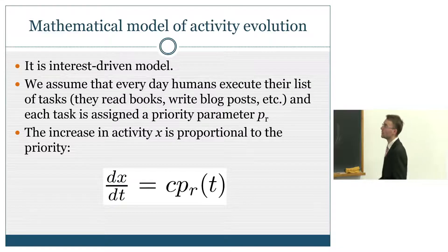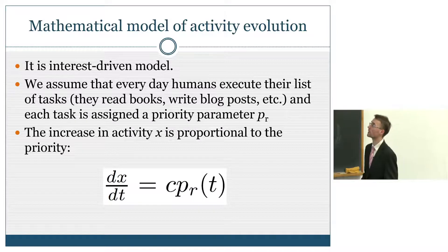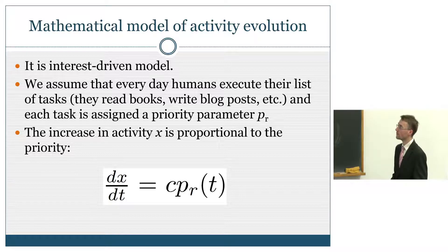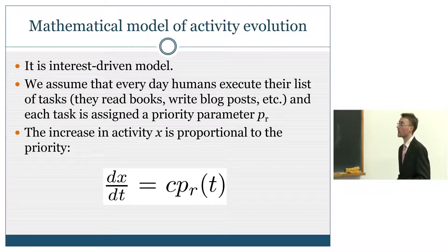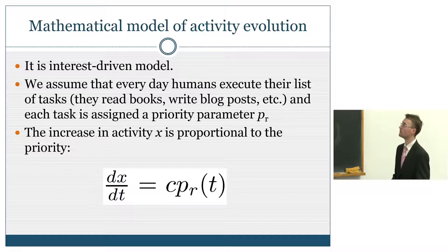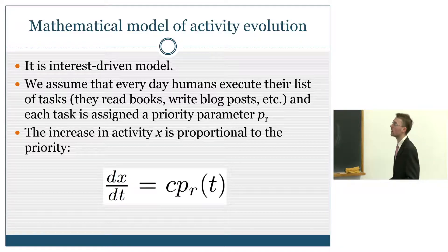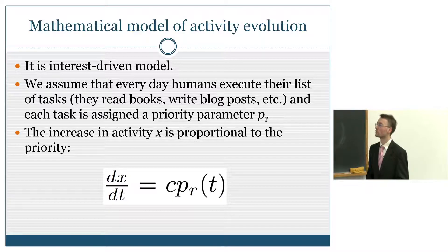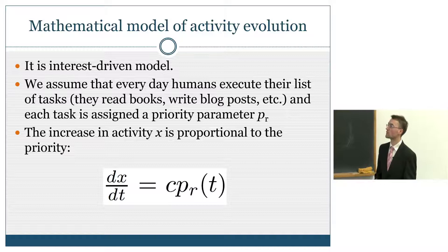I'd like to propose a model which can describe such behavior. It is the interest-driven model. We assume that every day humans execute their list of tasks — for example, they read books, write posts, write opinions about books. To each task is assigned a priority parameter PR, and the increase in activity X is proportional to the priority. The greater the priority, the greater the probability that a task will be executed. For example, if my blog is very important for me, I'll be adding posts to my blog every day.